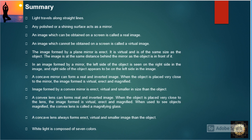The image is at the same distance behind the mirror as the object is in front of it. In an image formed by a mirror, the left side of the object is seen on the right side in the image and the right side appears to be on the left side. A concave mirror can form a real and inverted image. When the object is placed very close to the mirror, the image formed is virtual, erect, and magnified. The image formed by a convex mirror is erect, virtual, and smaller in size than the object.